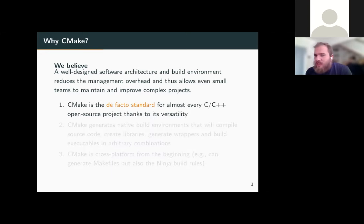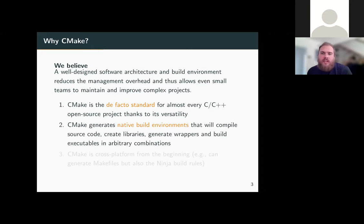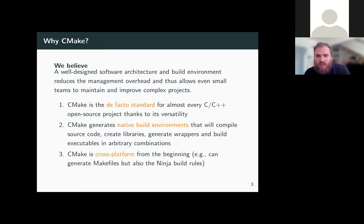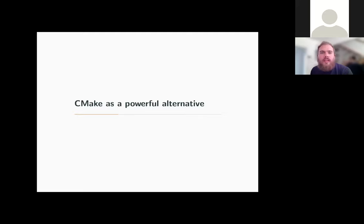CMake is the de facto standard for almost every C/C++ open source project thanks to its versatility. There is a CMake workflow available for almost every open source project. CMake can generate native build environments that compile source code, create libraries, generate wrappers, and build executables in arbitrary combinations — very useful when managing various build targets. It's also cross-platform from the beginning and cross-user, making it easy for other developers to jump in.